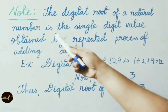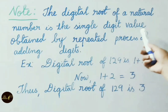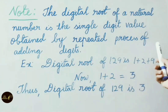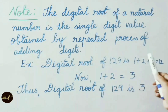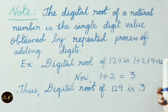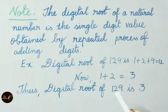Note: The digital root of a natural number is the single digit value obtained by the repeated process of adding digits. For example, the digital root of 129 is: 1+2+9=12, and then 1+2=3. Therefore the digital root of 129 is 3.